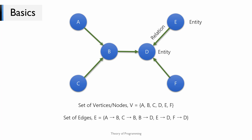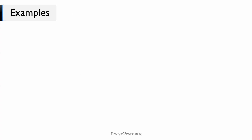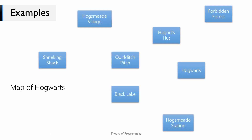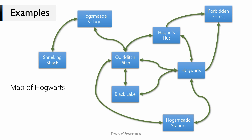Let us look at a few examples. Suppose you wanted to represent the map of Hogwarts as a graph. You need a set of vertices and a set of edges. Your vertices could be the different places around Hogwarts, and your edges could represent the possible paths between these places.